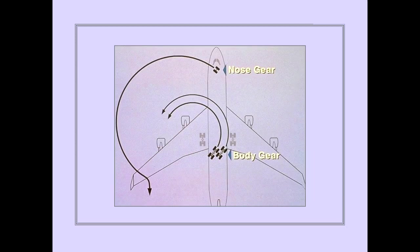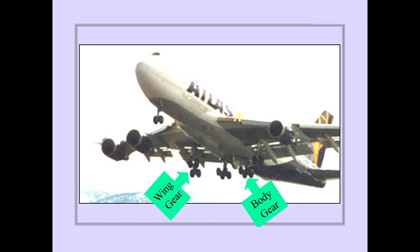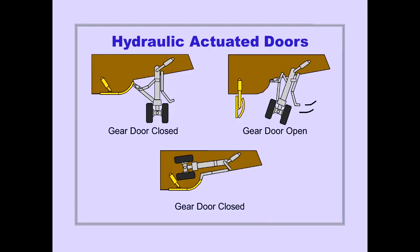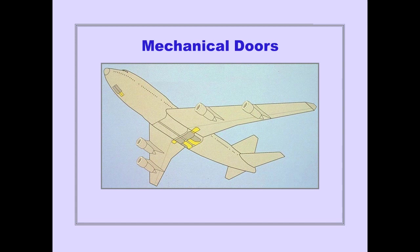In addition to conventional nose gear steering, the airplane has steerable body gear. The truck assemblies for the wing and body gear are tilted by hydraulic actuators to fit into the wheel wells. Each wheel well has hydraulically actuated doors, which are in the closed position with the gear either extended or retracted. Each gear assembly also has mechanical doors linked to the gear.